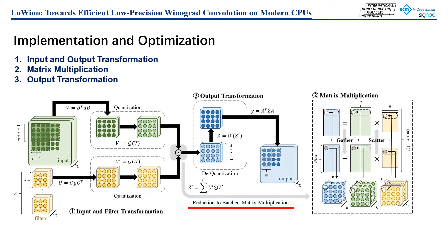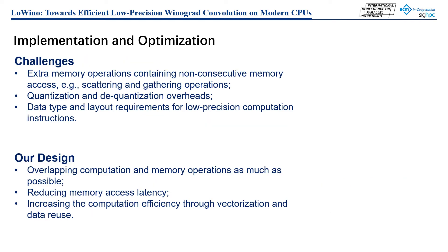There are some challenges when implementing an efficient low-precision Winograd convolution solution. First, extra memory operations such as scattering introduce non-consecutive memory access. Second, quantization and dequantization operations introduce overheads. Third, the data type and layout need to meet the requirements for low-precision computation instructions.